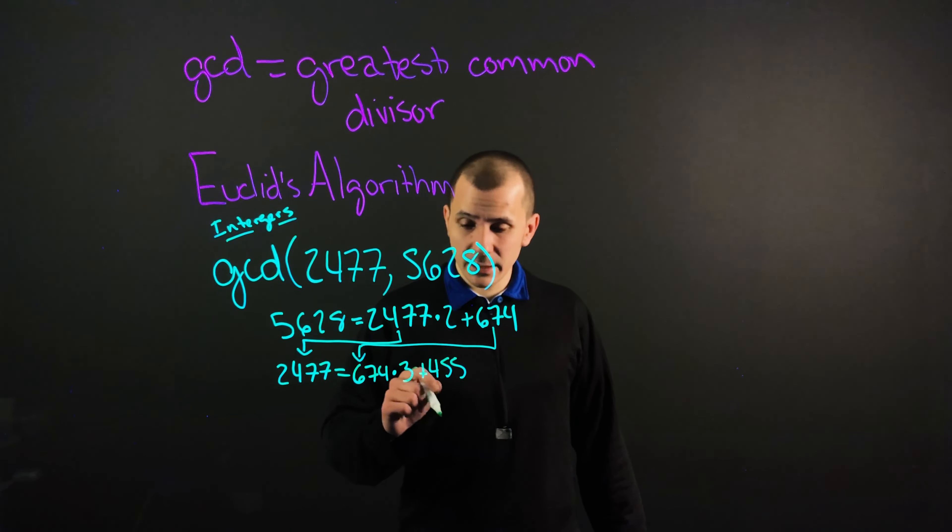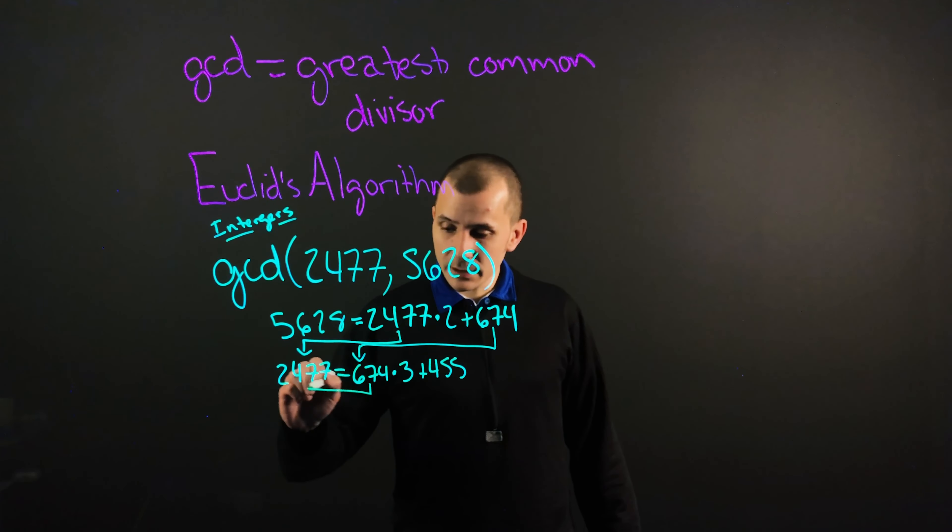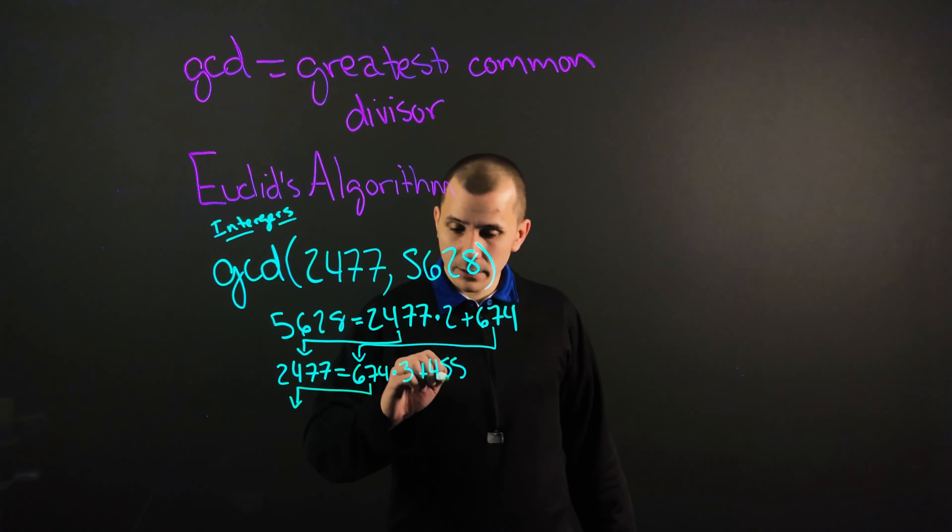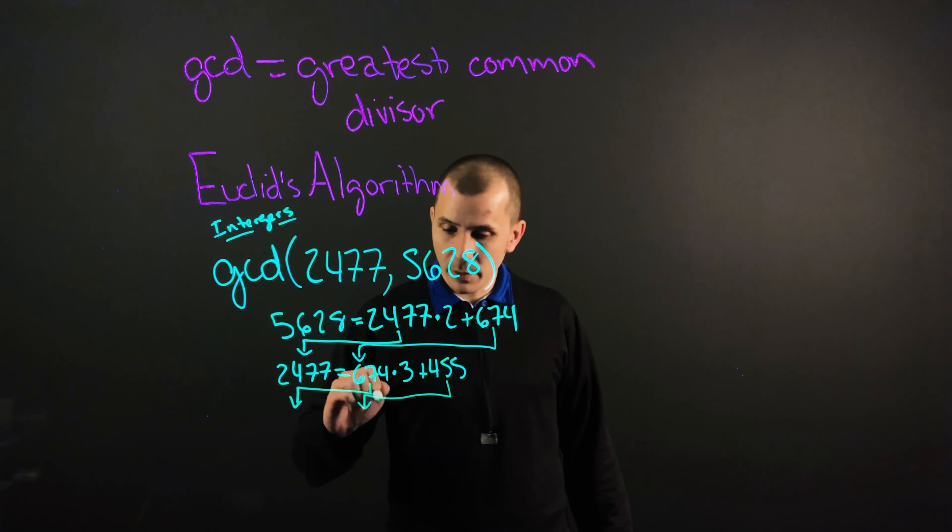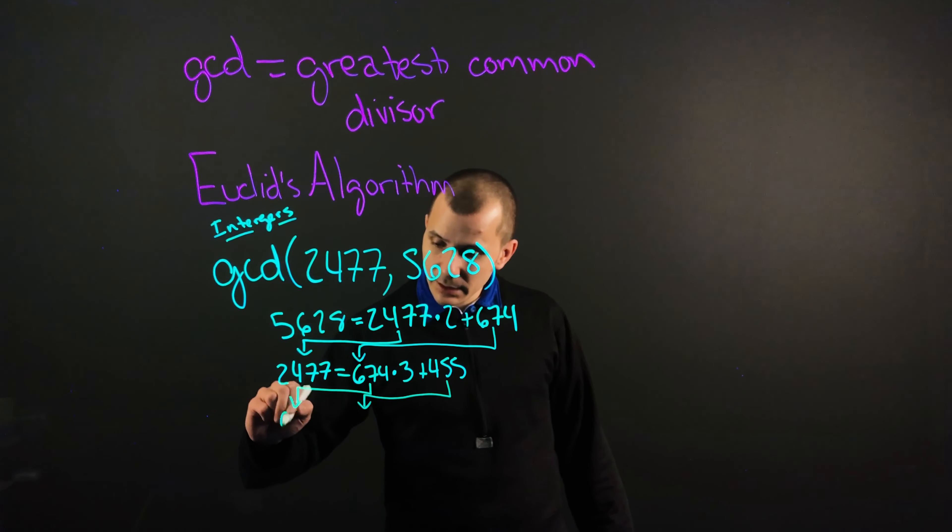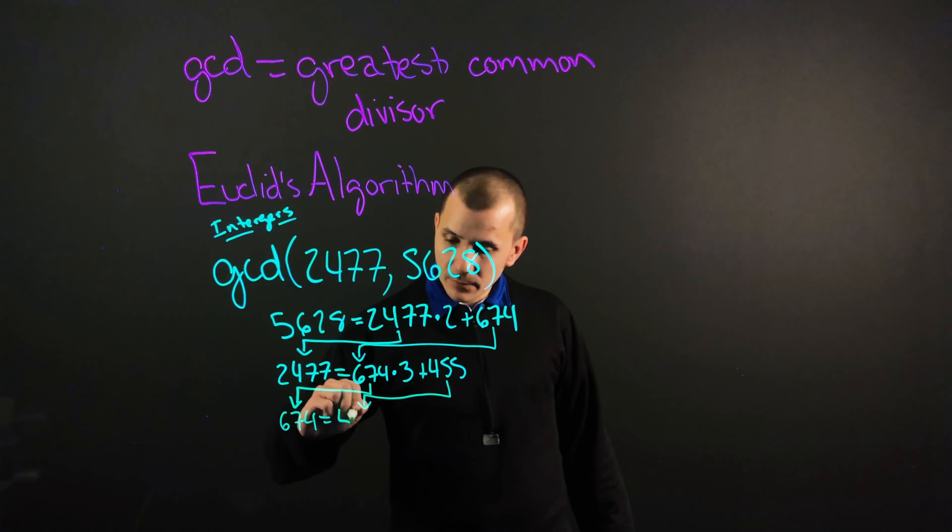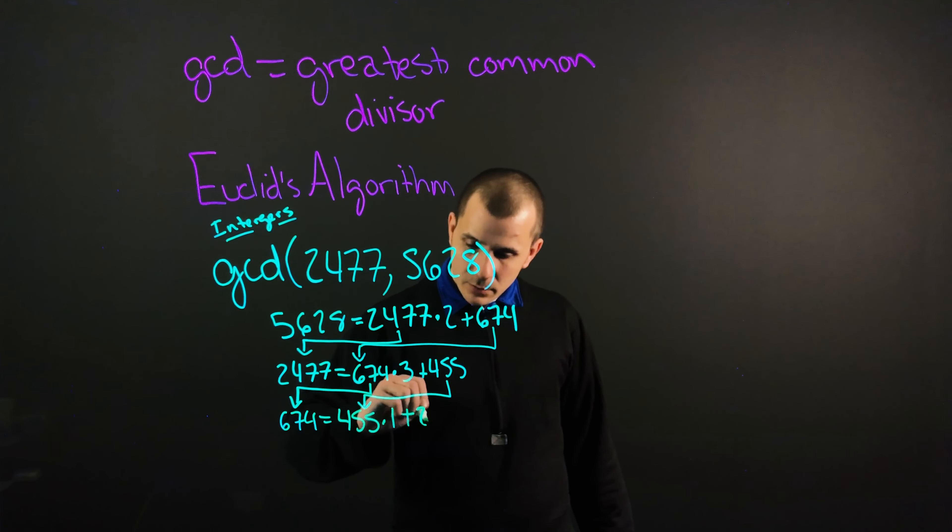And again, you can probably see where this is going. We're going to take our 674, bump it over here, and take our 455 and bump it over here. So our 674 equals 455 times by 1 plus 219.